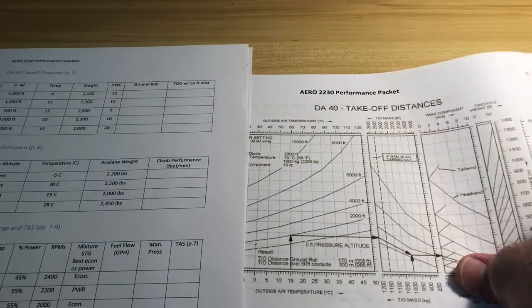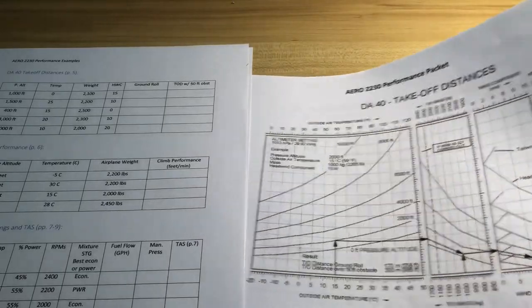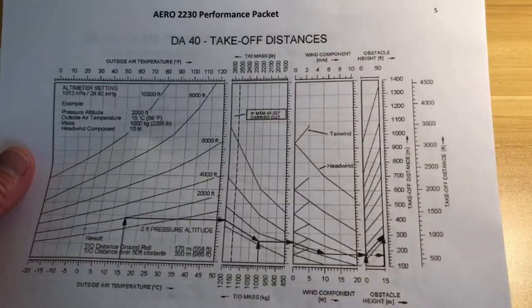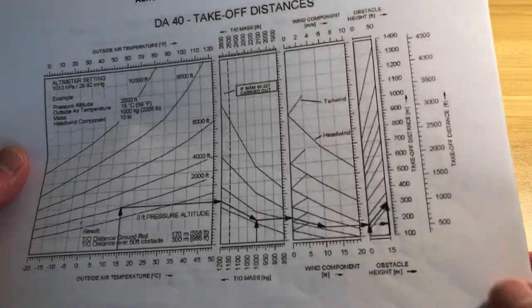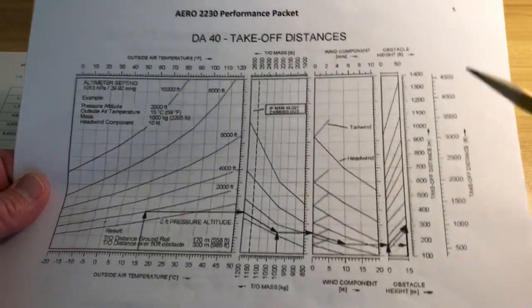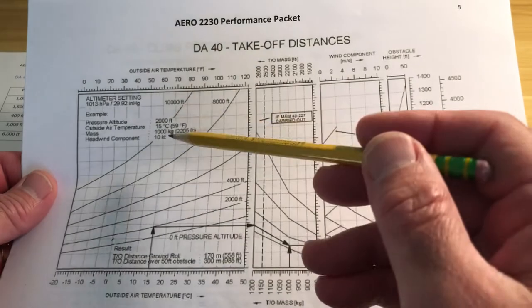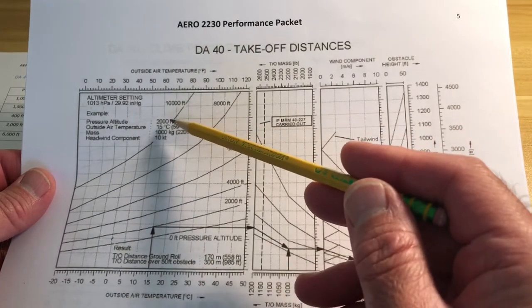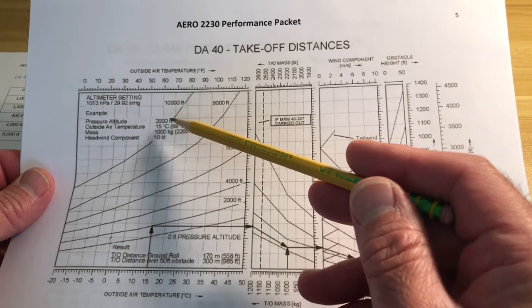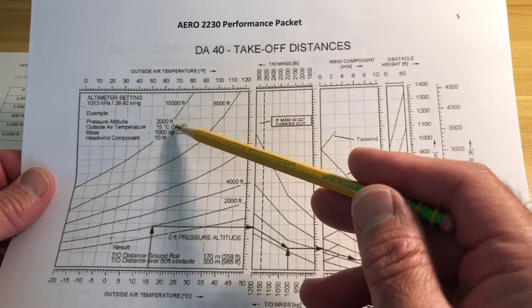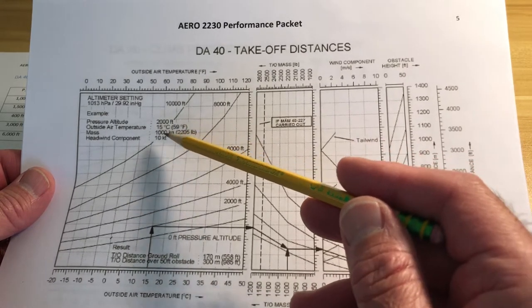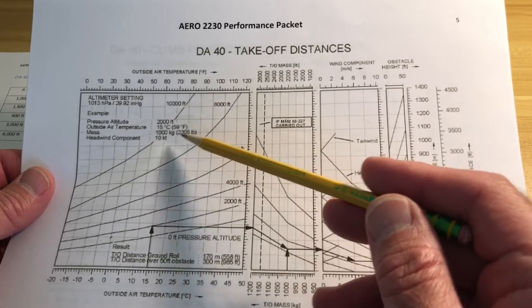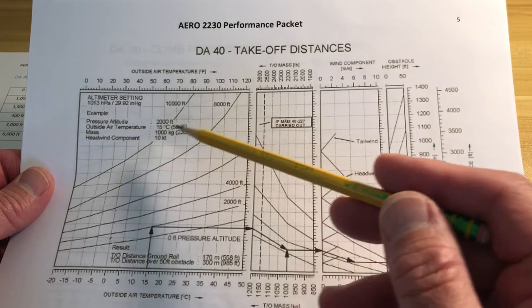Let's take a look at the Diamond DA40 takeoff distance chart before we move on to the problem. The nice thing about these charts is they usually include an example so that you can see how the chart is used. In this case they give an example of a pressure altitude of 2,000 feet, outside air temperature of 15 degrees C, weight of the aircraft is 2,205 pounds, and a headwind component of 10 knots.